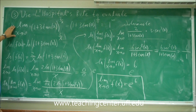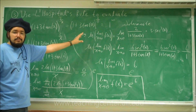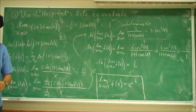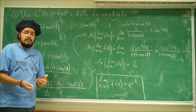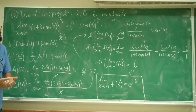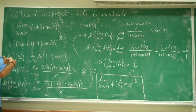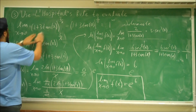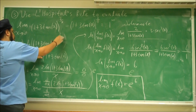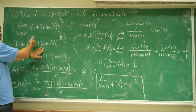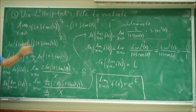We're told to use L'Hôpital's rule to evaluate this limit. First we plug in 0 to see what indeterminate form we get — we got 1 to the infinity. That's not a form we can apply L'Hôpital's rule to directly. The only forms that work are infinity over infinity or 0 over 0. So we do more work: we define f(x) equal to the expression, then introduce ln to both sides to bring 2/x down in front.